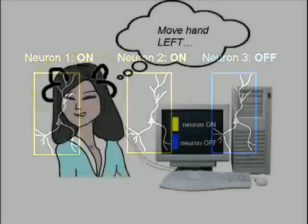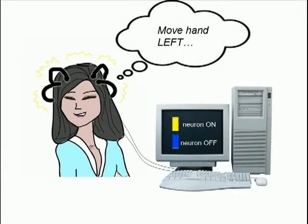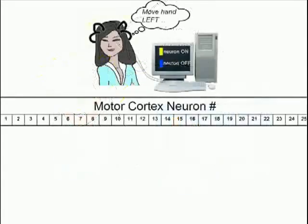Now ask a friend to think, move hand to the left. Then let's record 25 of her motor cortex neurons, again and again.